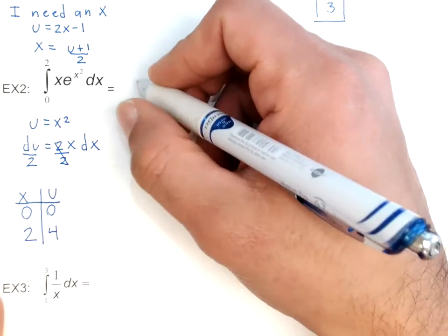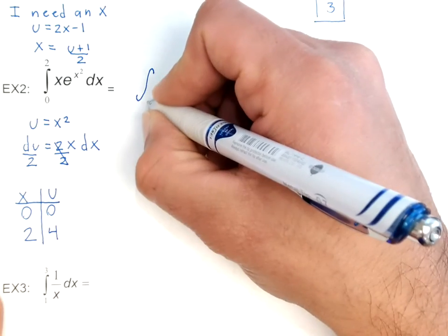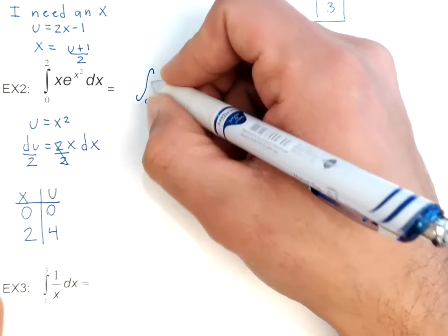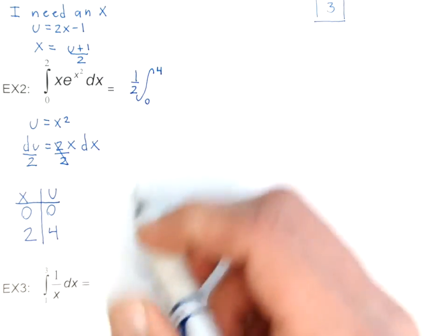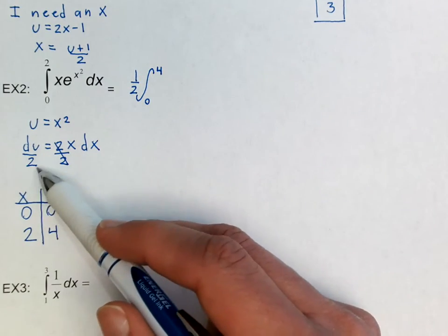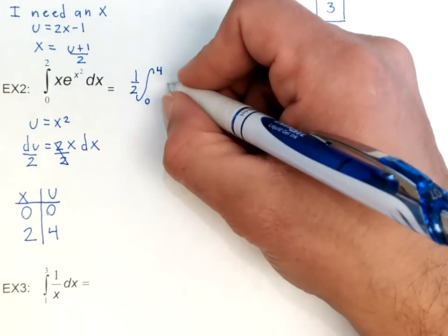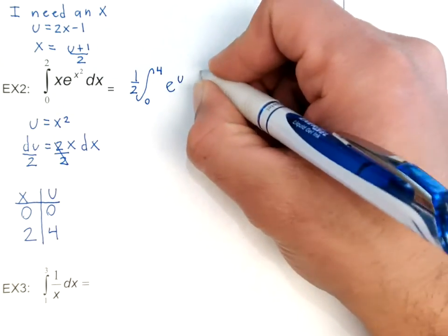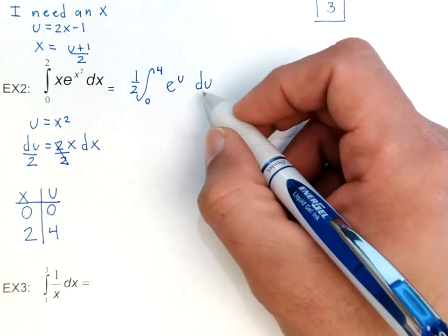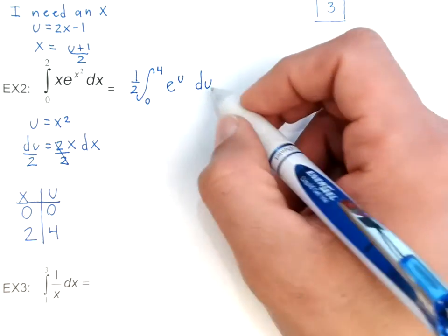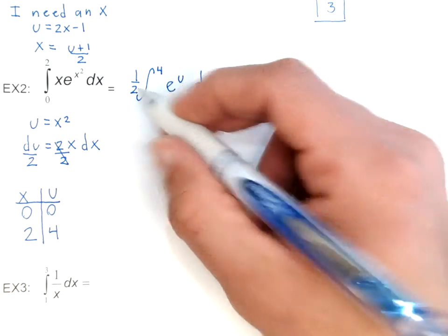All right. So this one's actually going to be pretty quick. So what I'm going to do here is I'm going to have the integral between 0 and 4. I'm going to pull out that 1 half. Remember, that 1 half came from this du over 2. I have e to the u, du. Remember, originally this was du over 2, but I went ahead and pulled that 2 all the way out here.